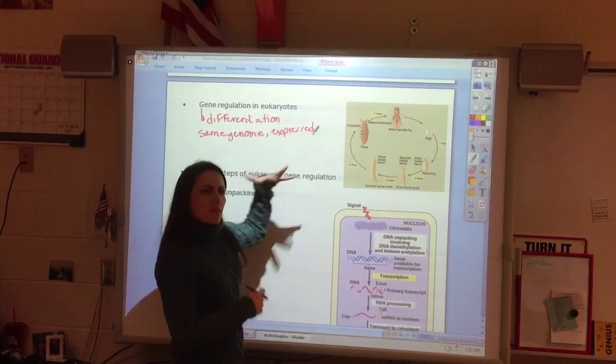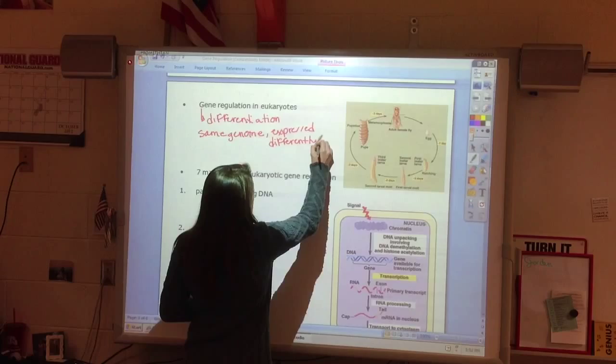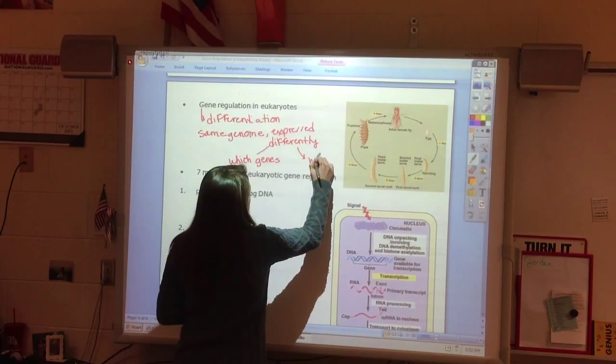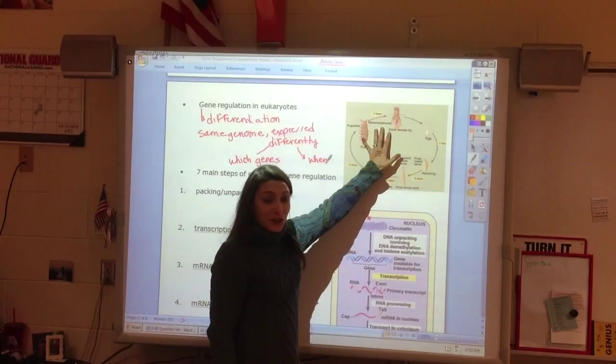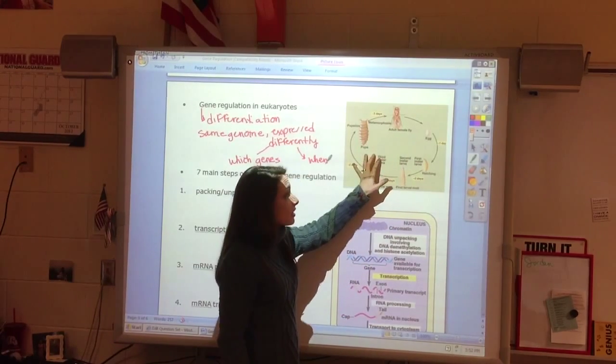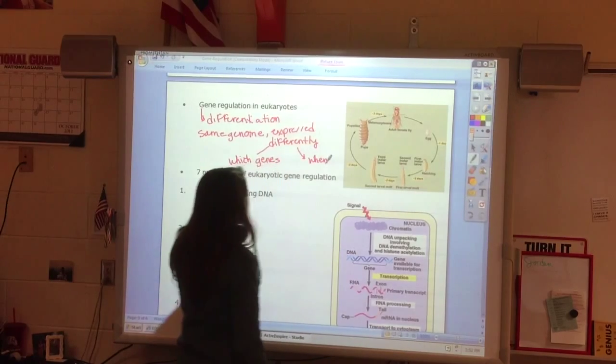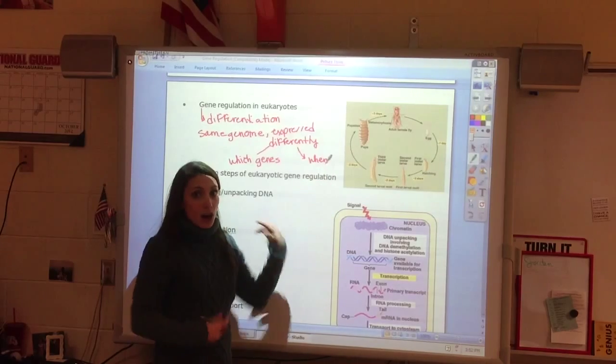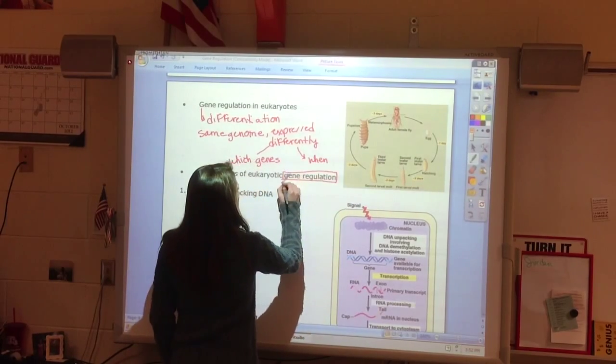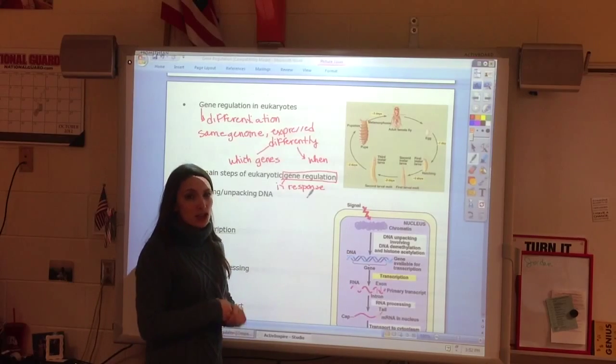And so what do we mean by expressed differently? Well, sometimes we mean different genes are expressed. So which genes? And sometimes we mean when. So if you look at the Drosophila melanogaster that we're going to get to be real friendly with, this fruit fly goes through a metamorphosis, a complex life cycle. And so we're going to see that certain genes are only active during certain parts of its life cycle. Other times we need to respond to the environment. So something arrives in the environment, and we are going to see that a lot of this regulation is mainly in response. So it's a response to something that has changed in the environment.